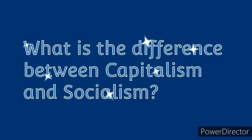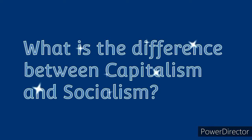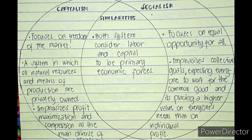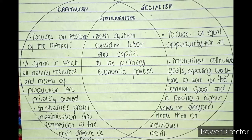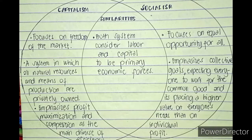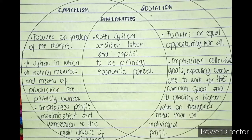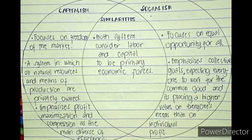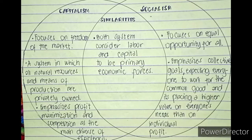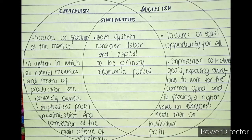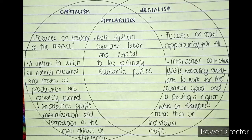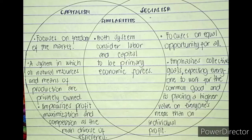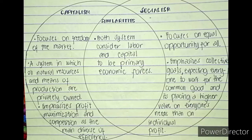What is the difference between capitalism and socialism? Based on my answer in Learning Activity 1, capitalism focuses on freedom of the market. It is a system in which all the natural resources and means of production are privately owned. It emphasizes profit maximization and competition as the main drivers of efficiency.